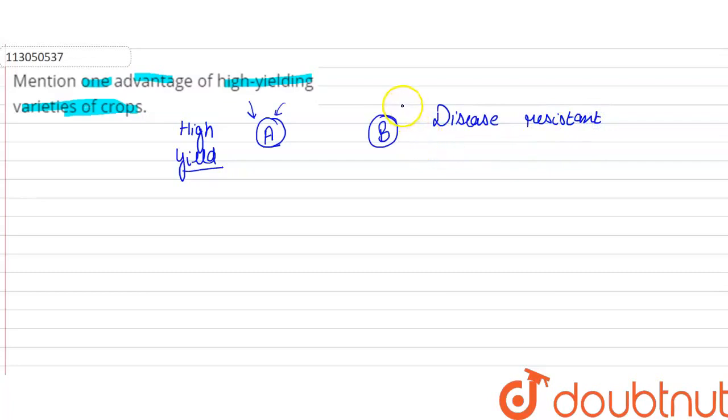But the yield difference is that it will produce less than the high yielding variety. So it will have less reproduction.